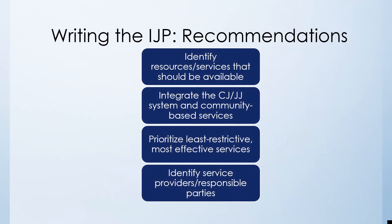There are a few things to keep in mind when building recommendations as part of the IJP process. It's important to ensure that resources and services are available to ensure success, to integrate the juvenile or criminal justice system with community-based services, to ensure the least restrictive and most effective recommendation to elicit the needed outcome, and to identify responsible parties or a service provider that will help implement each recommendation.